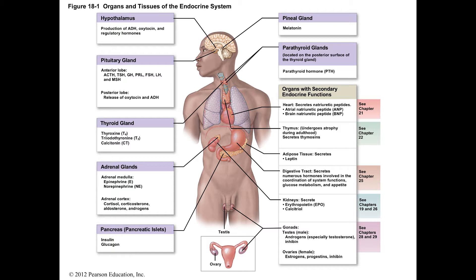Then we have other organs and tissues where producing hormones is a secondary function. For example, the heart's primary job is to pump blood, but it also produces hormones. The thymus primarily matures T-lymphocytes, but also produces hormones. Adipose tissue's primary job is protection, but it also produces hormones. The digestive tract digests food but also produces hormones. The kidneys filter blood but also produce hormones. And the gonads are primarily for reproduction but they also produce hormones.